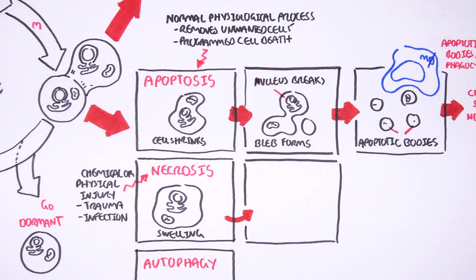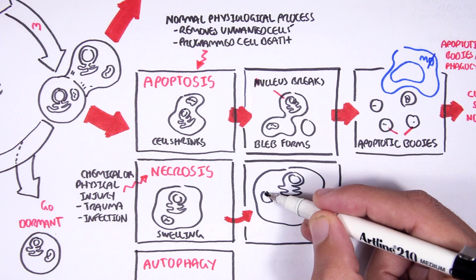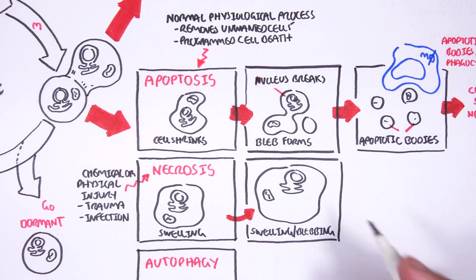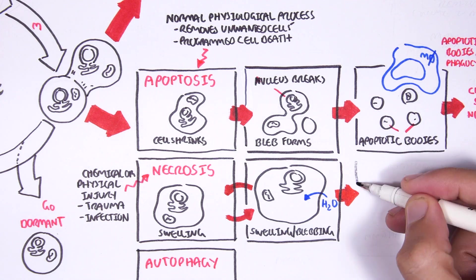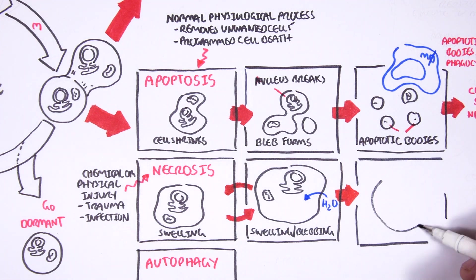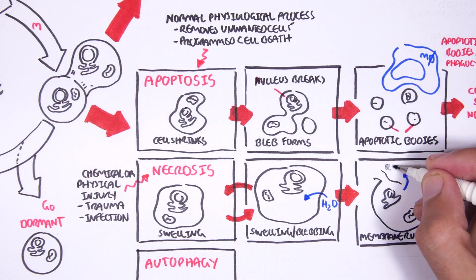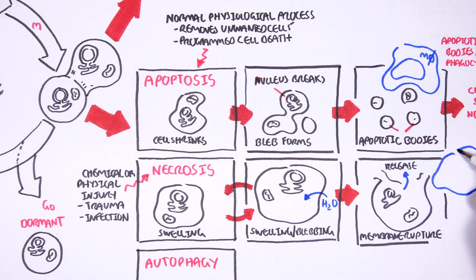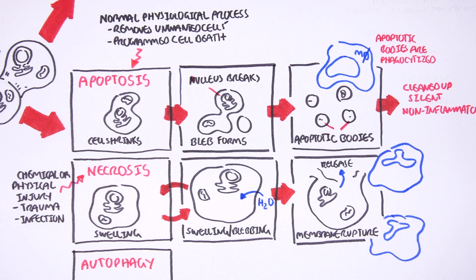Necrosis is non-programmed cell death. And what happens here is that the cell will swell. Not only this, but the organelles will swell too and it will accumulate, just keep accumulating water. And this process continues. The cells will also show signs of blebbing as though it will separate, but in reality it will just grow and then rupture. And it will break the outer cell membrane, releasing all its cellular content to adjacent cells, causing further damage.